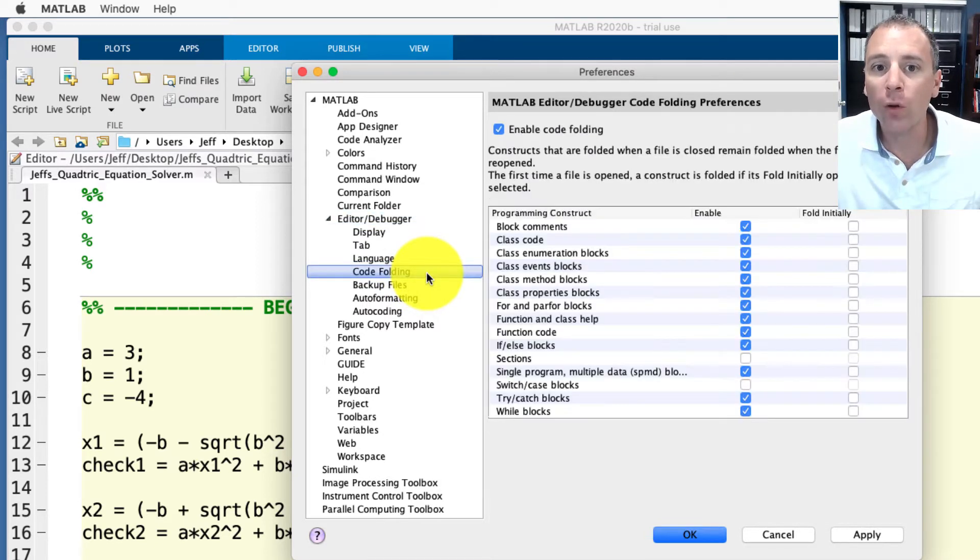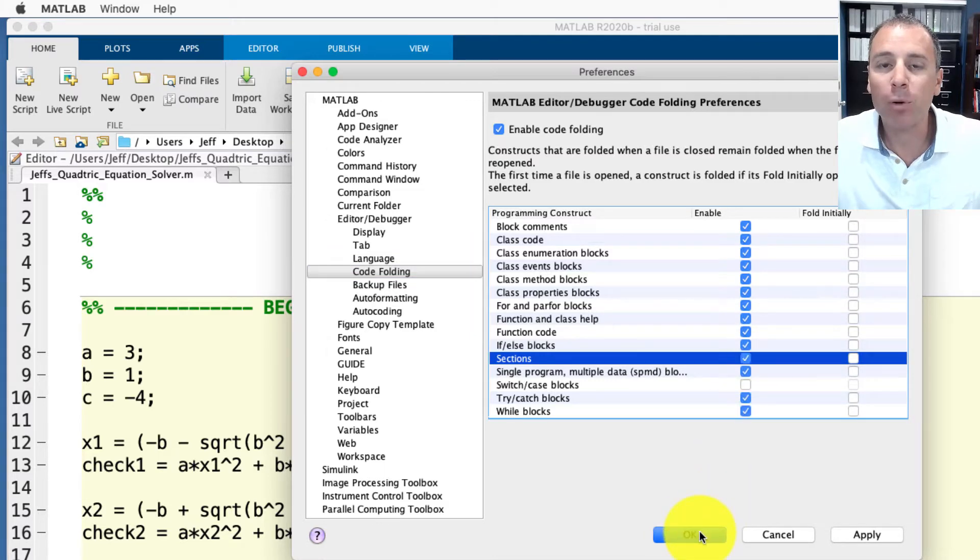Click on code folding. Here this enables us as users to fold code and kind of hide details when we don't want to see them and then unfold them to see them. If we scroll down to programming construct you see the sections highlight. I'm gonna go ahead and enable that. So click the enable button and push okay.